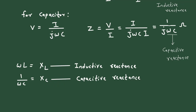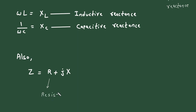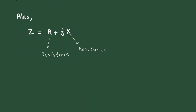Now, what if the impedance is a combination of a resistor, inductor, and capacitor? So it is given by Z is equal to R plus J times X, where R represents resistance and X represents reactance. Now what is X? X is equal to XL minus XC, where XL is the inductive reactance and XC is the capacitive reactance.